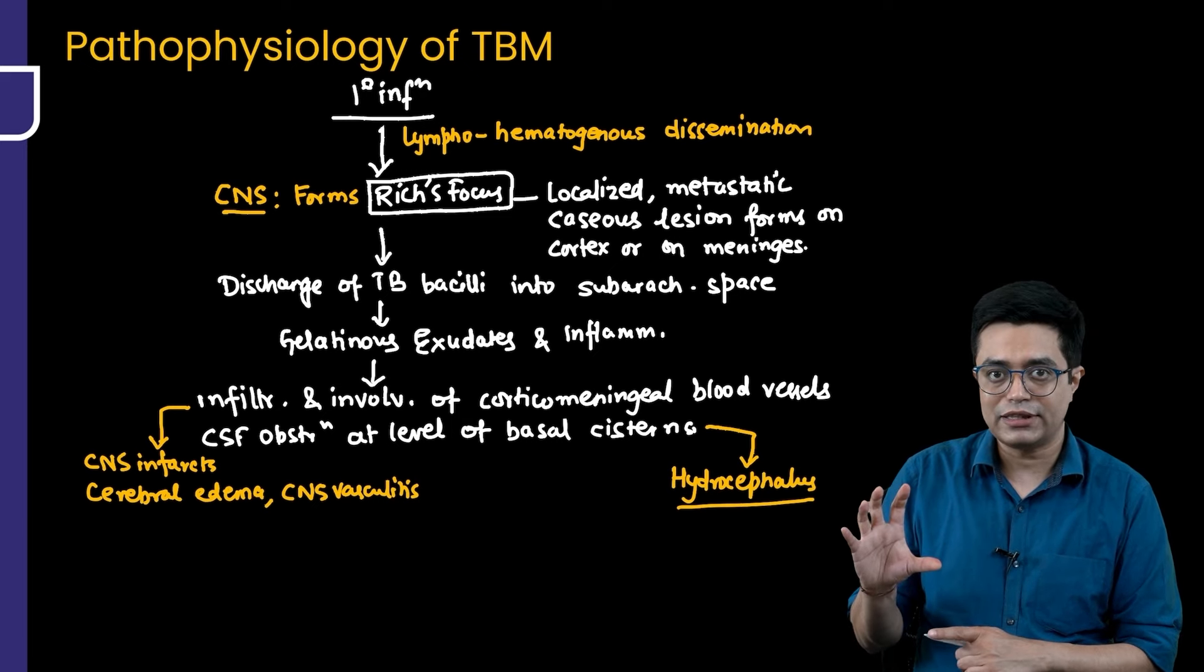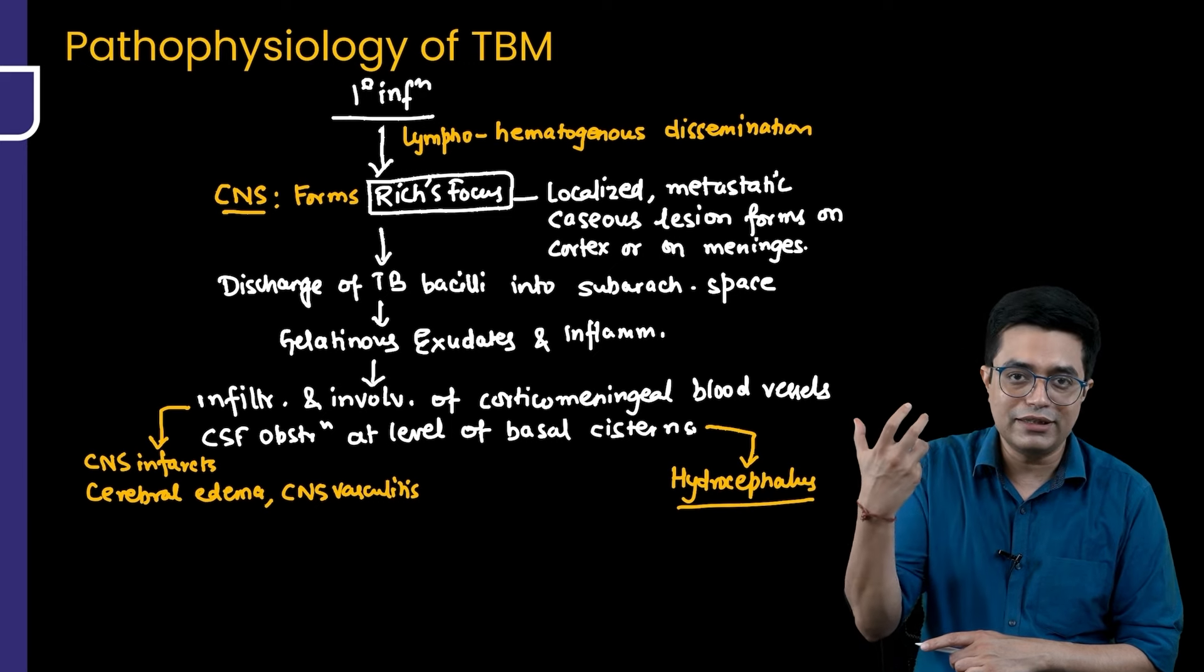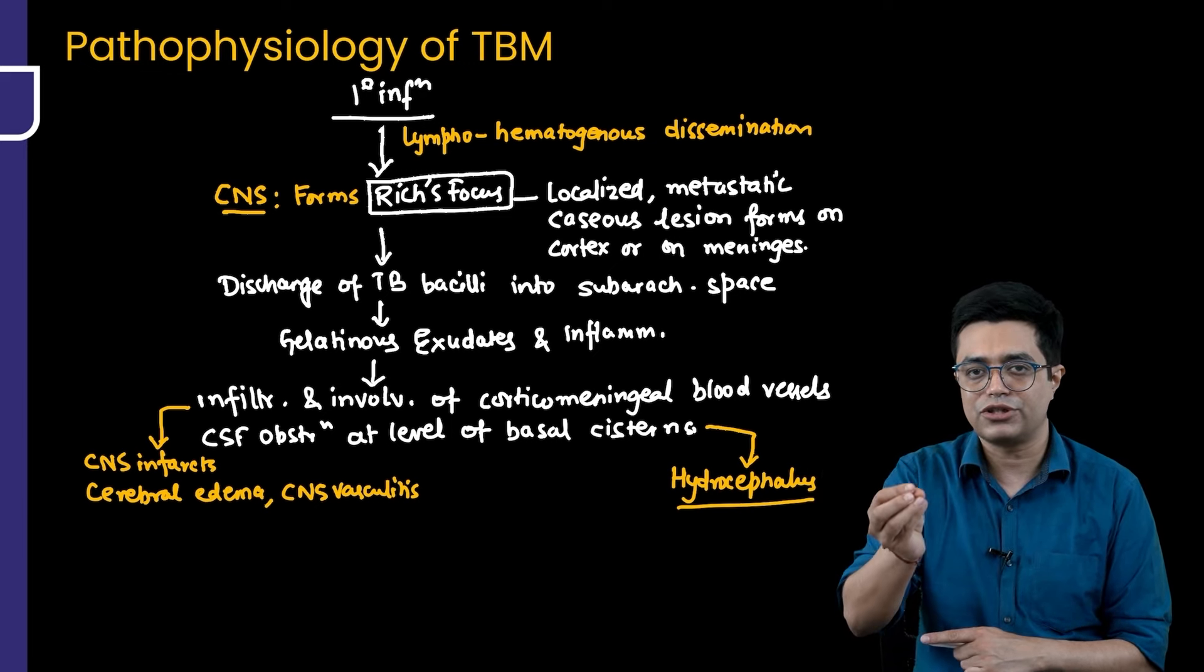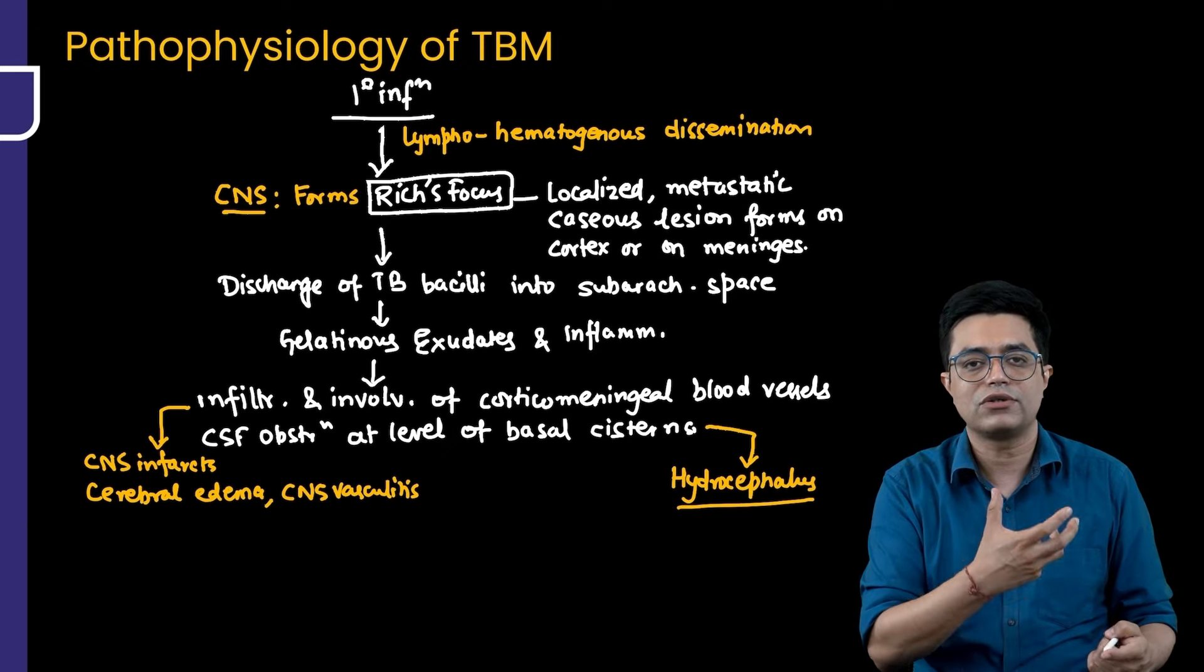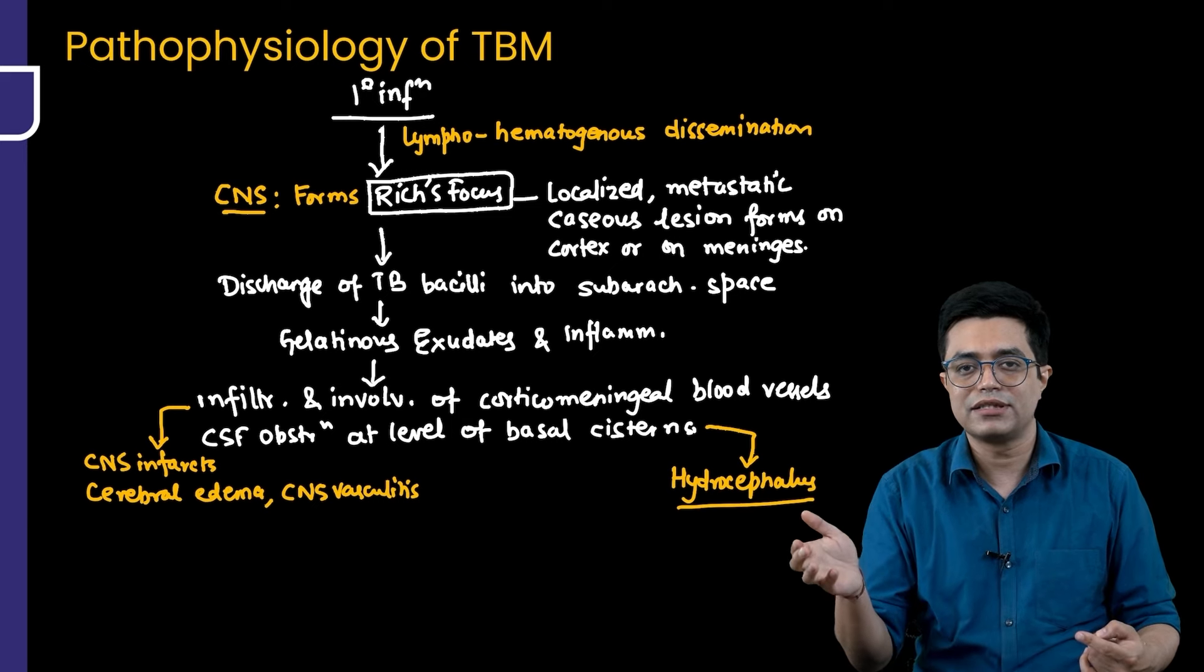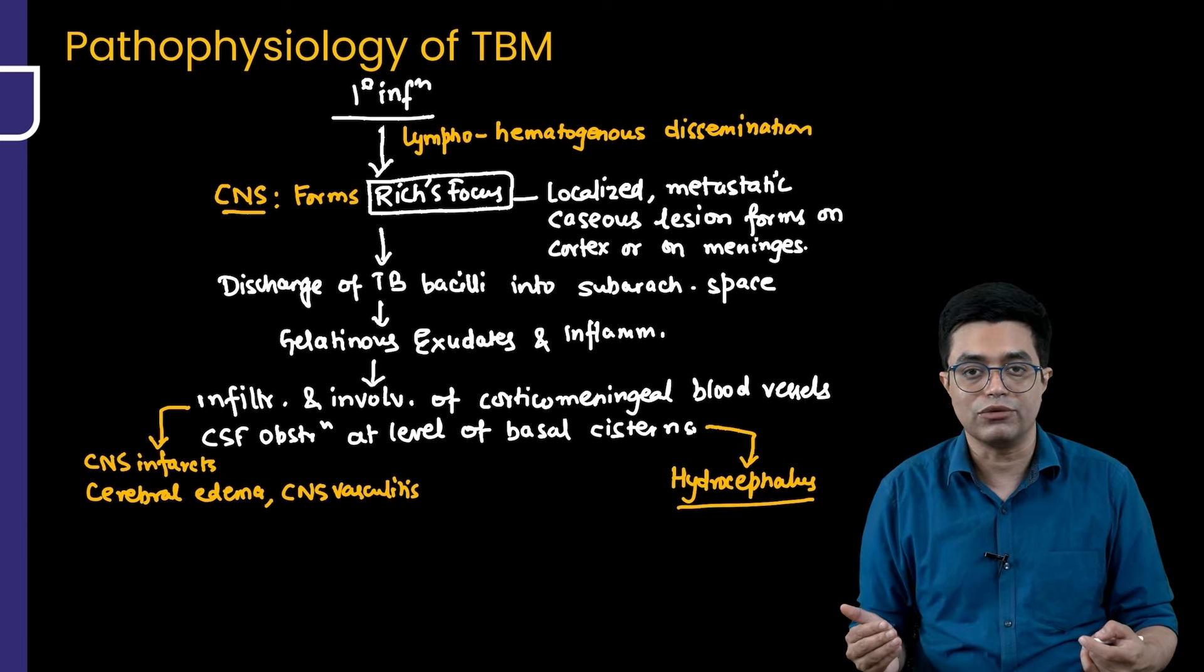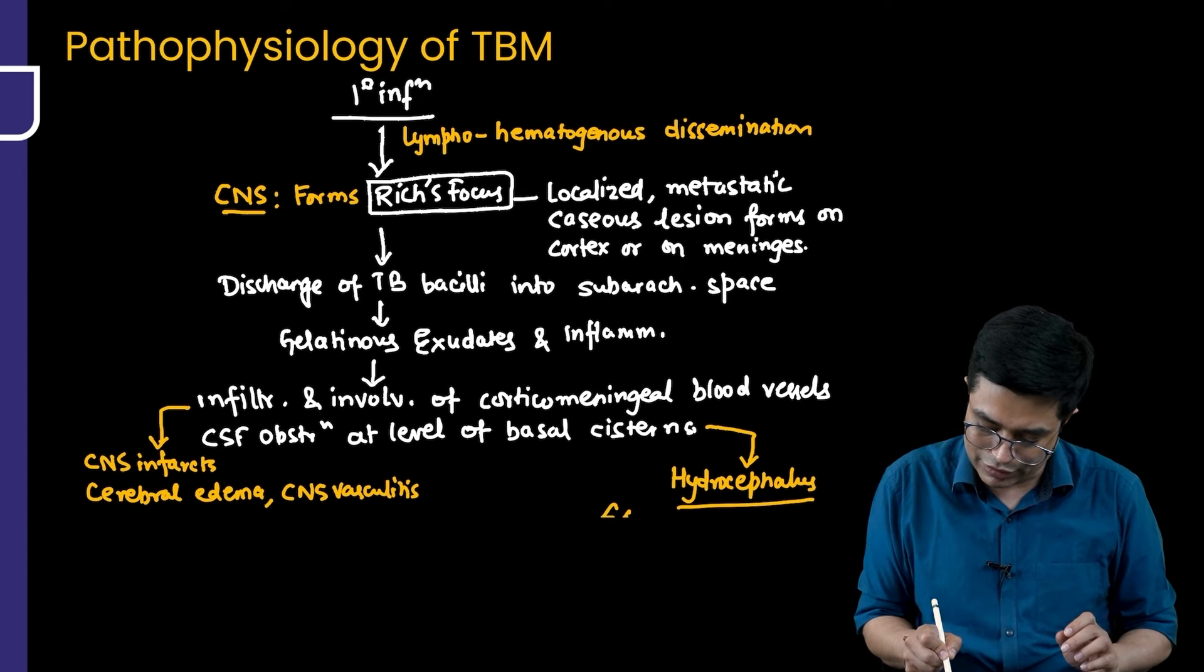The type of hydrocephalus is due to obstruction or problem in the absorption of CSF in the basal cistern region and beyond. You know that whenever there is obstruction to the flow of CSF in the ventricular system itself, that is called obstructive hydrocephalus. And whenever there is a problem in the basal cistern area, subarachnoid space or absorption by arachnoid villi, it produces a non-obstructive also called as communicating hydrocephalus. Remember it is more commonly communicating hydrocephalus.